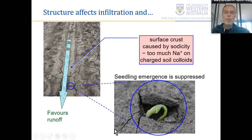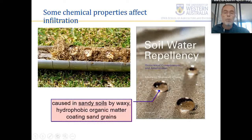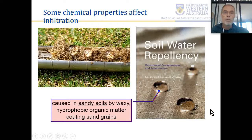These structural problems are much more of an issue for managed systems such as agriculture and horticulture than for natural systems. The other main soil property affecting infiltration rates is water repellence, caused mainly in sandy soils. In sands where matric potential effects are not so strong, waxy or oily organic coatings on sand grains can make them hydrophobic or water repellent, obviously decreasing infiltration — water can just sit on the soil surface and not soak in.